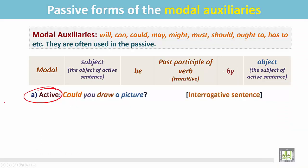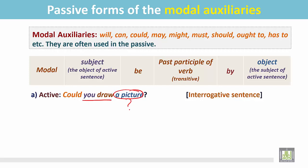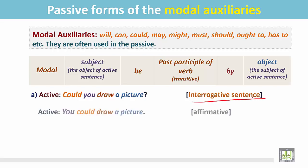This is an active sentence in the interrogative form: 'Could you draw a picture?' In this sentence, you draw what? A picture. It is the object for the verb 'draw', so it can be changed into a passive sentence. First, change this interrogative sentence into a statement: 'You could draw a picture.' Now this sentence is in the affirmative form as a statement.